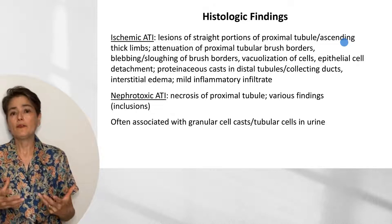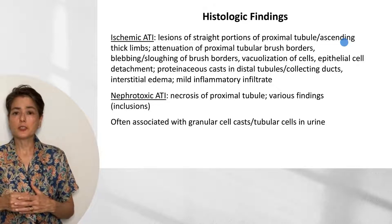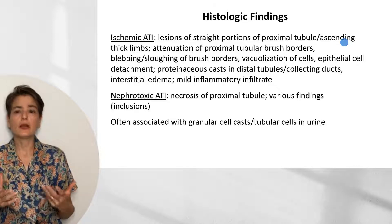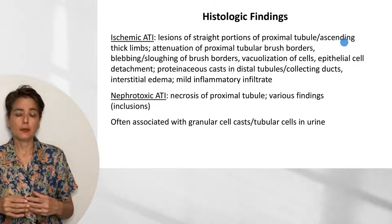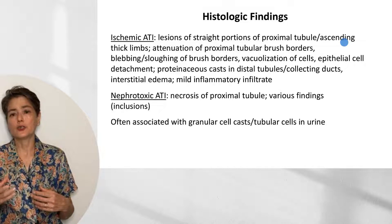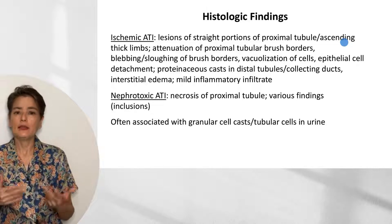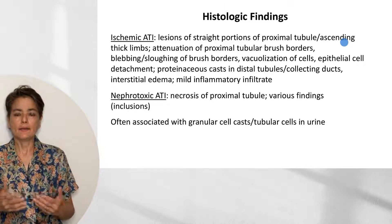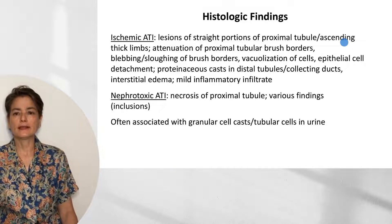In nephrotoxic ATI, the necrosis tends to be in the proximal tubule, with various findings depending on what the toxin is. You might see myoglobin casts or inclusions from lead poisoning, among other possibilities. You can also see granular cell casts and tubular cells in the urine.